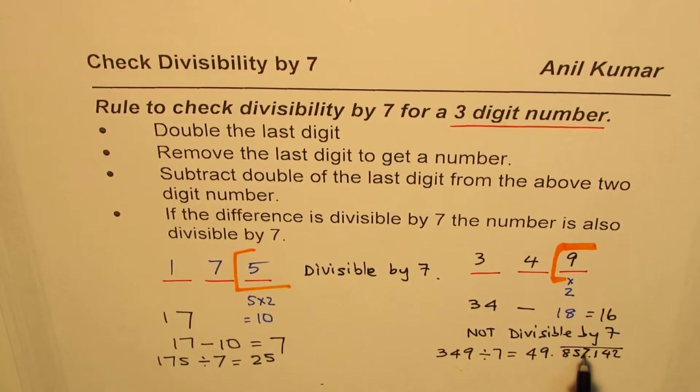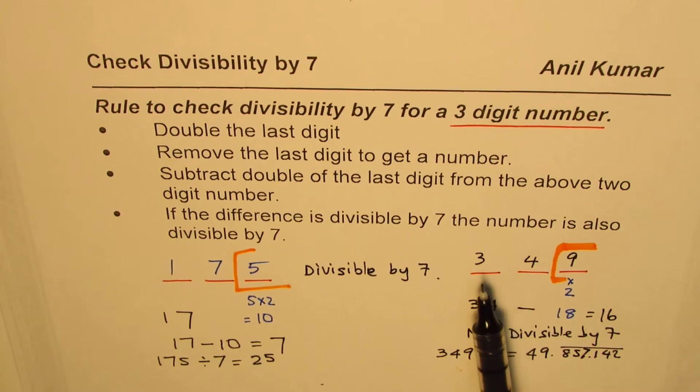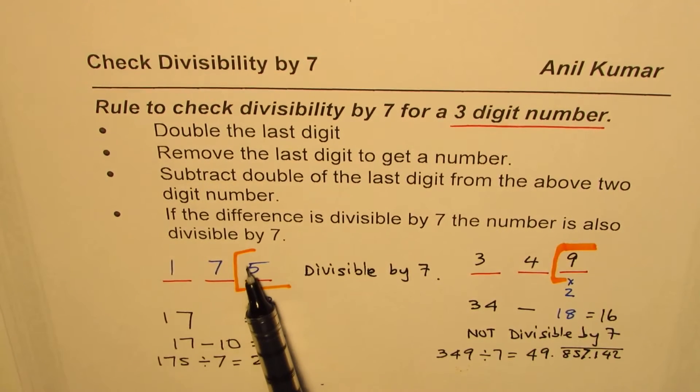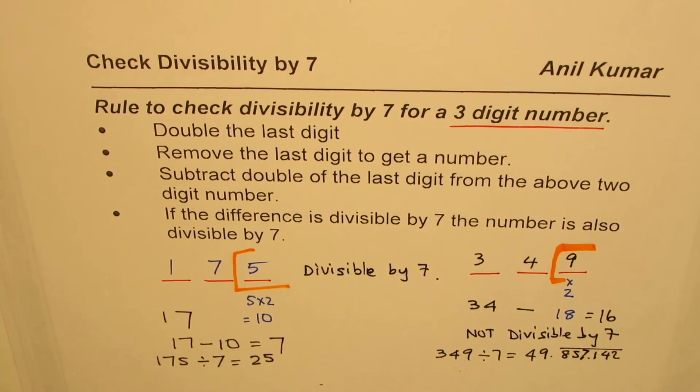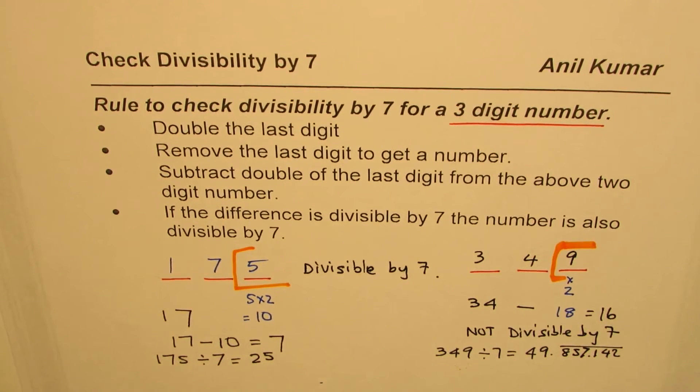So that is how we could check even without a calculator. As an exercise you can try out with few numbers. Write any three-digit number and then check it out. Double the last digit, remove it, find the difference, and see whether the difference is divisible or not. If you can divide the difference, you can divide the whole number. That's the whole idea. I'm Anil Kumar and I hope this helps you understand this complicated rule of divisibility by 7 for a three-digit number. Share it with your friends and subscribe my videos if you want to learn from them. Thank you and all the best.